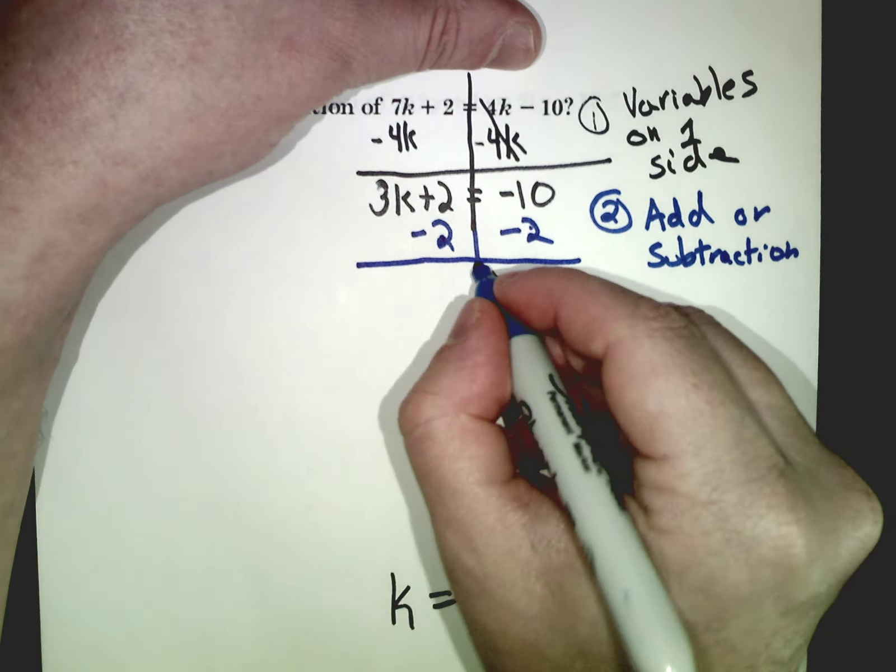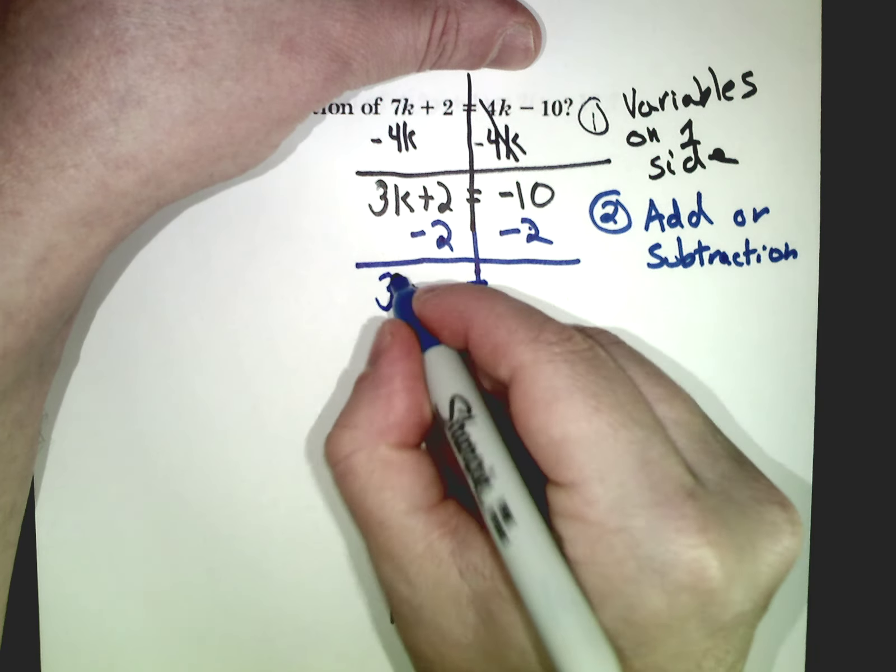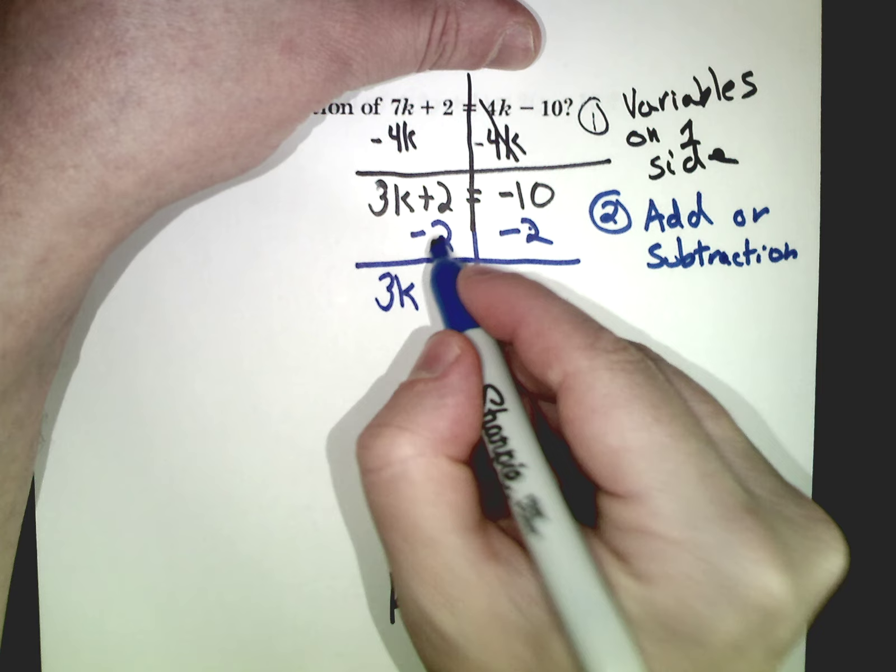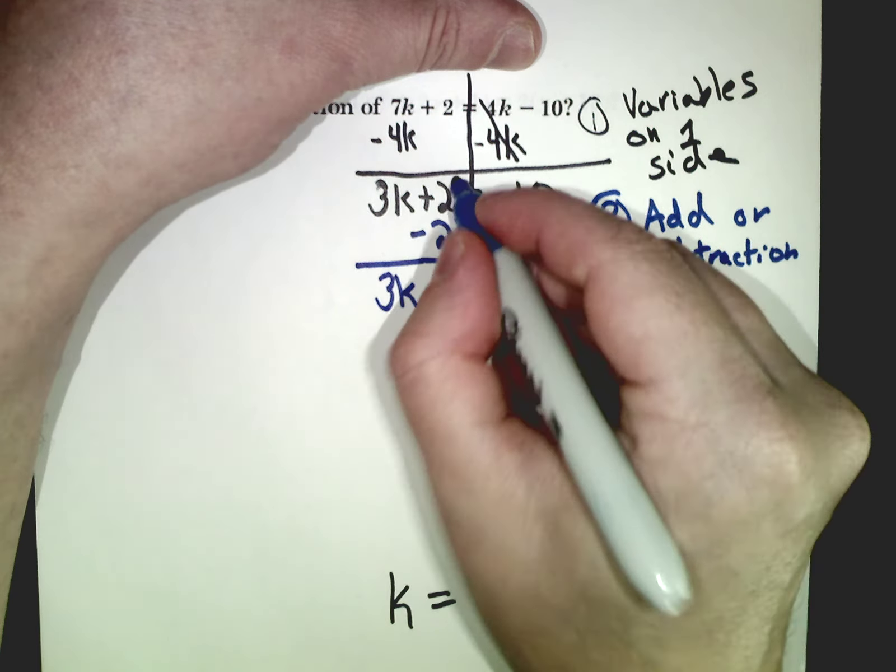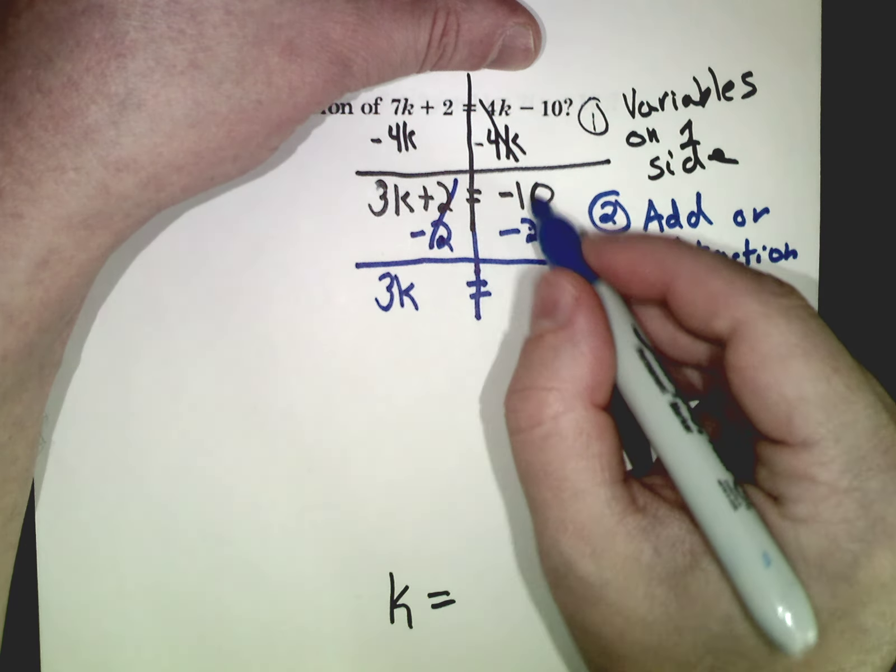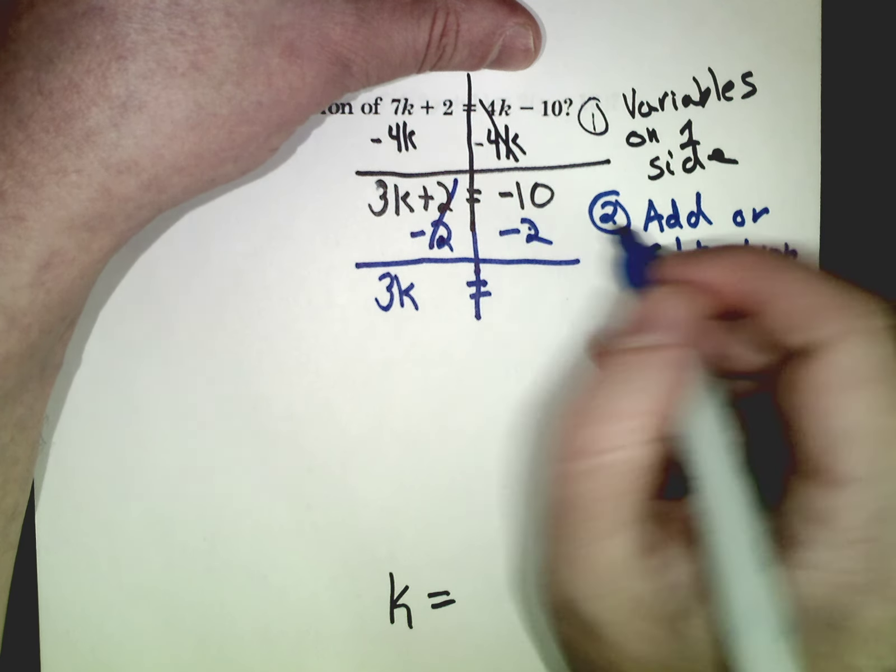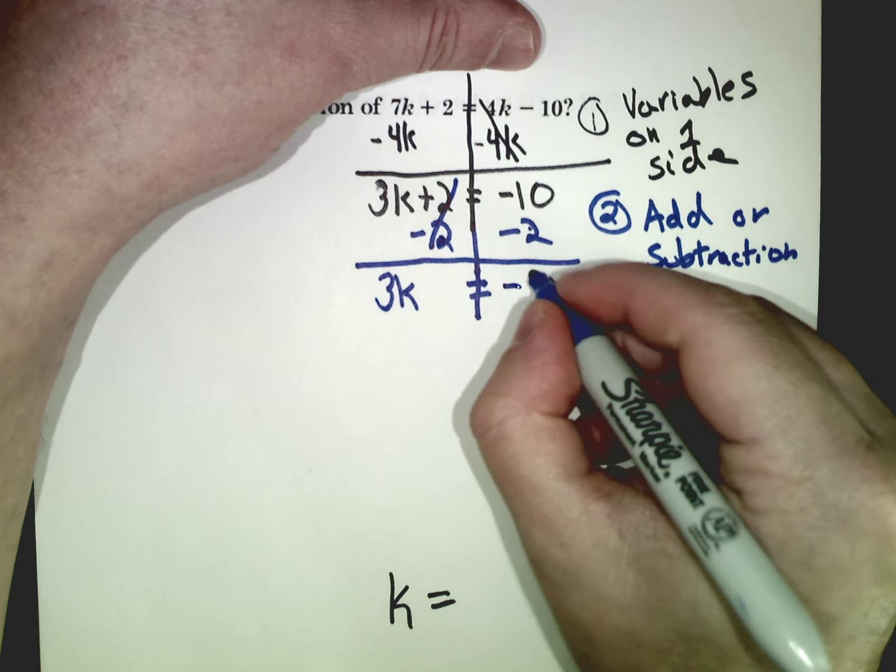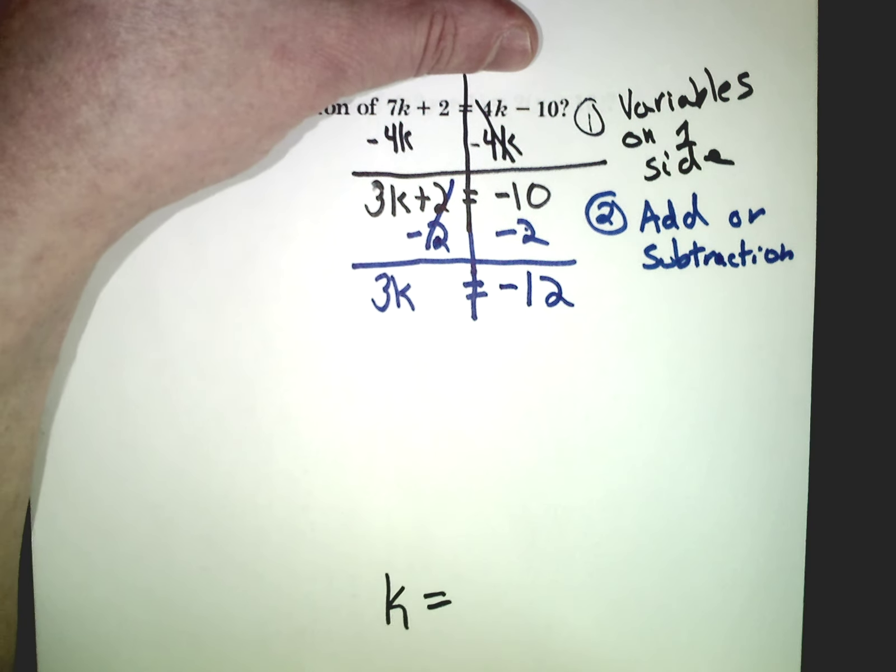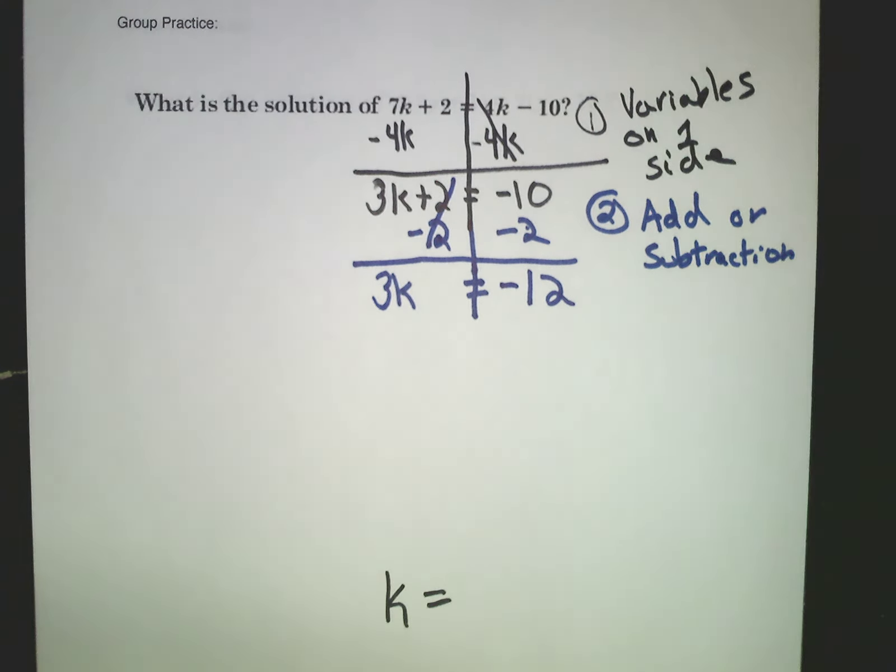Make a line. Bring it down. You have your equal sign here. 3k, you just bring down. 2 minus 2 is just 0. So goodbye. Negative 10 plus negative 2 or negative 10 minus 2, however you want to think of it, negative 12. Step 2 done.